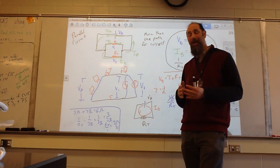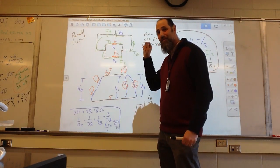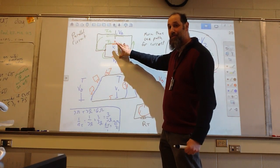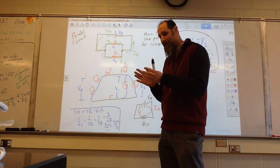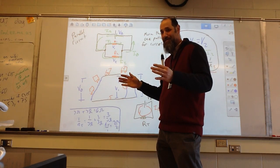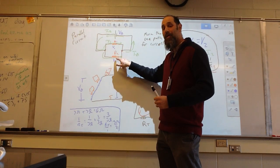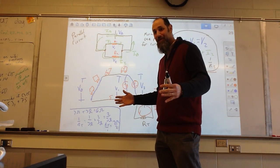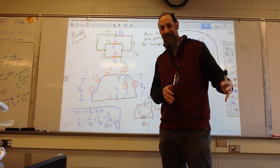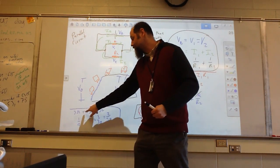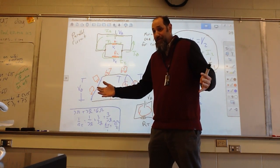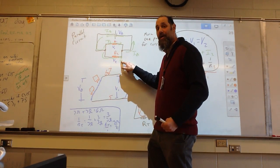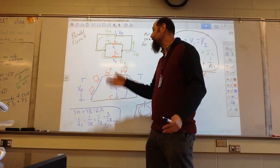One way to think about this is with a highway analogy. What do resistors resist? The flow of current. When we go from one path to two paths, think about what happens on a highway when you increase the number of lanes — it makes it easier for traffic to flow. More paths for current means it's easier for current to flow, so we get less total resistance. Adding resistors in series increases total resistance, but adding resistors in parallel decreases total resistance and therefore increases total current.